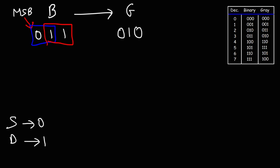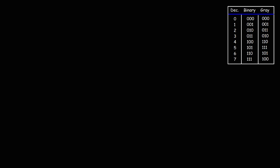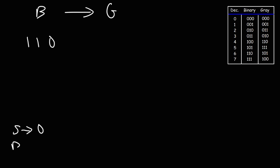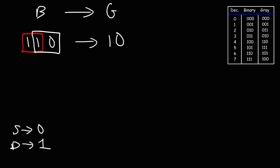Let's try another example. Let's convert the binary code 110 into gray code. First, we write the MSB, which is 1. Then we compare the first two bits: 1 and 1 are the same, so we write 0. Then 1 and 0 are different, so we put 1. So 110 corresponds to gray code 101.